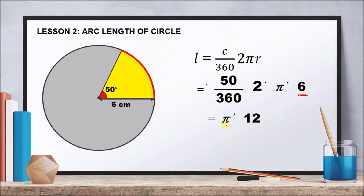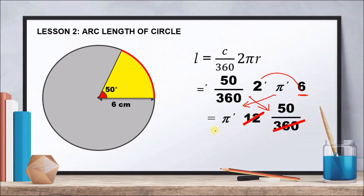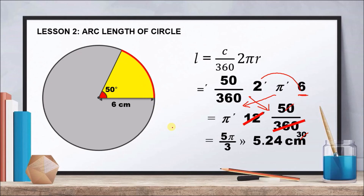Simplifying: we get π × 12, then cancel 12 and 360 to get 50/30, reducing further — we are left with (5/3)π. Substituting π = 3.14, the length of the arc is 5.24 centimeters. I hope you understood the process on how to get the length of our arc.